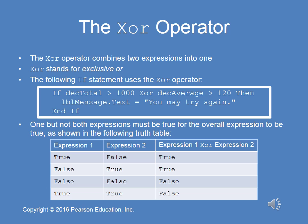The exclusive or (XOR) also combines two expressions into one compound expression. For example: if decTotal > 1000 Xor decAverage > 120. Looking at the truth table: if one is true and one is false, you get true; if both false, you get false; but if both are true, you also get false. That's the difference — XOR is exclusive, meaning only one must be true, not both.